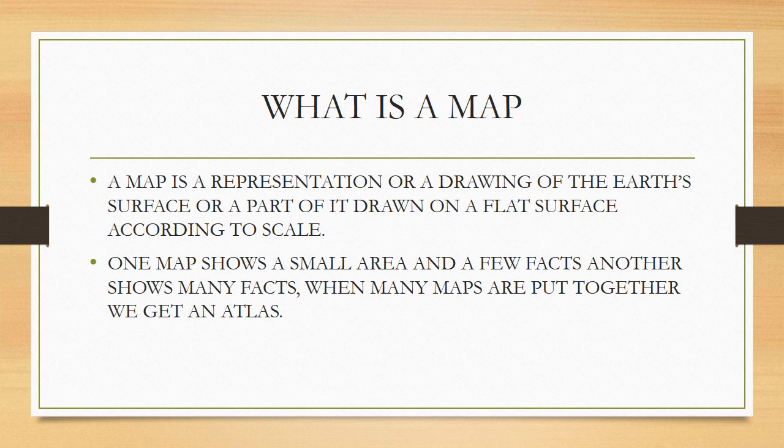So what is a map? You might have seen a globe in our school, but what is a map? A map is a representation or a drawing of the earth's surface or a part of it drawn on a flat surface according to scale. When it was a globe it will be shown in the exact shape of our earth, but for better studying purpose we can use maps.